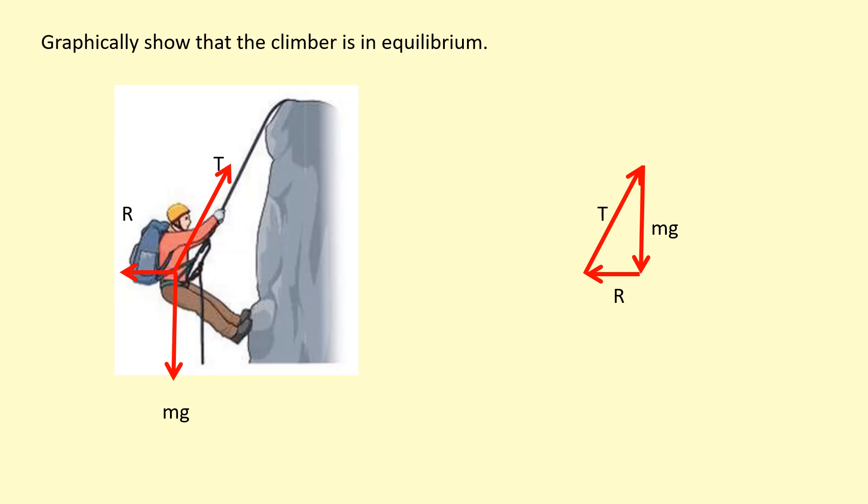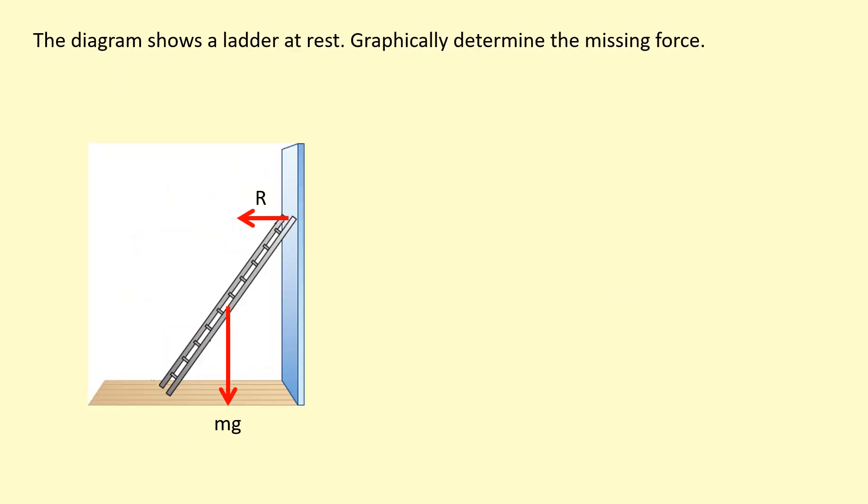This ladder is at rest. We're going to assume that it's in equilibrium so that the resultant force is zero. We need to determine the missing force. So the missing force is going to be from the ground. The ground is obviously going to be pushing on the ladder. So to find the missing force, we know that it's at rest so it's going to form a closed shape when we add the forces from tip to tail.